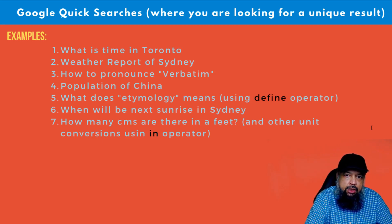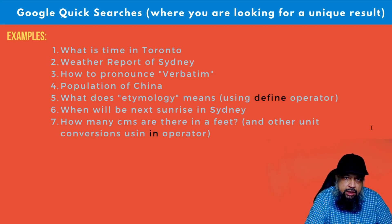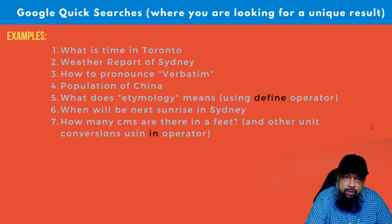Before I start doing searches on Google, I will walk you through some of the examples I will be doing. For example, if you want to know what time it is in any particular city, you can immediately find it by just typing 'time' and the name of the city. Similarly, for a weather report for any city, type 'weather' and the name of the city.